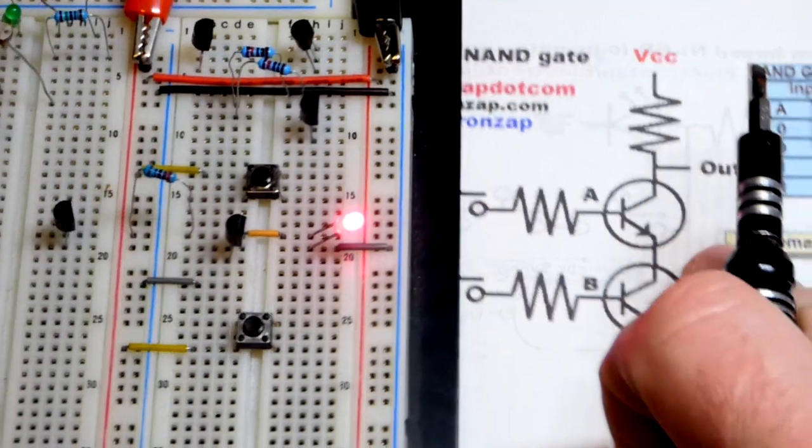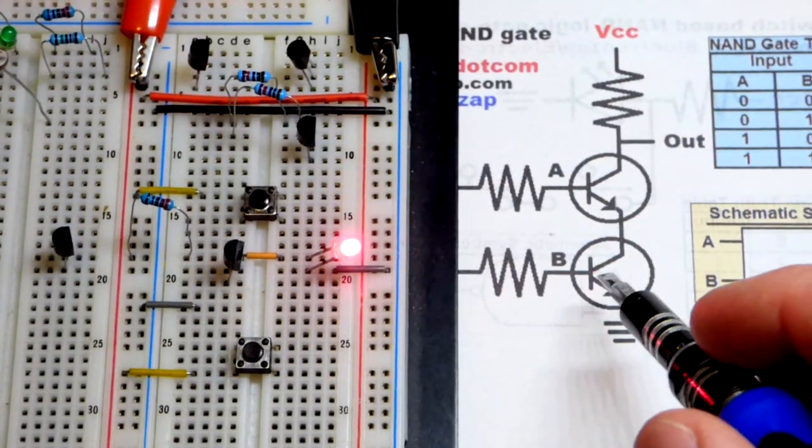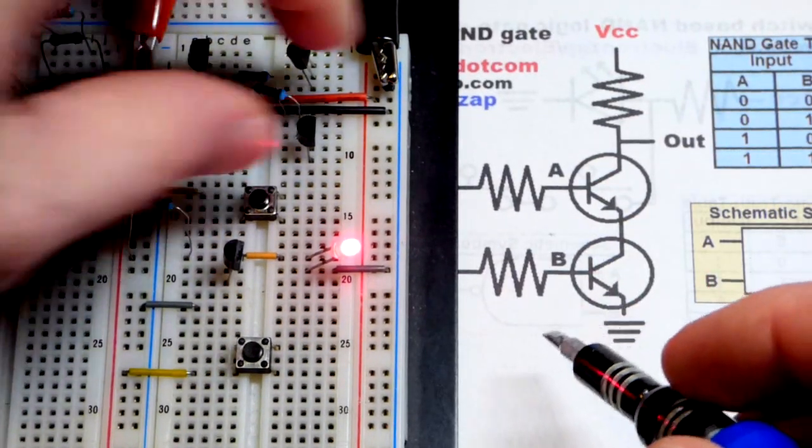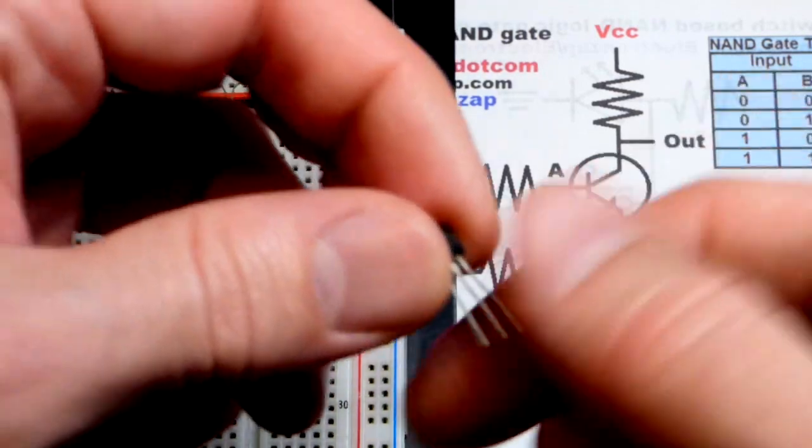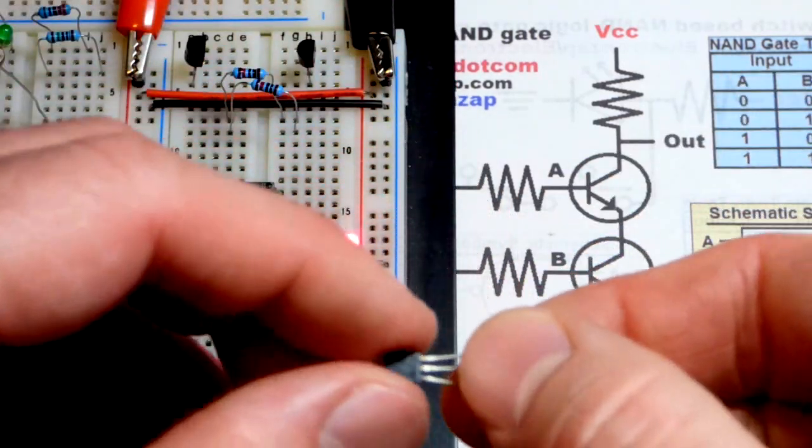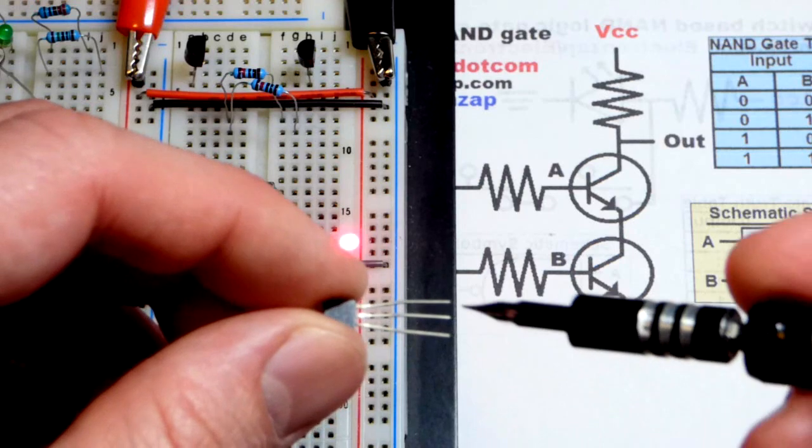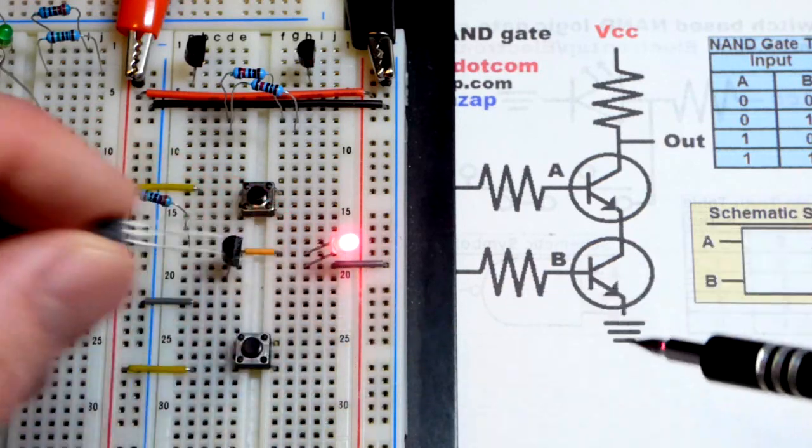The other NPN bipolar junction transistor, again, a 2N2222. Same pin layout, looking at the flat side, swivel it that way. Now the emitter is at the bottom, base in the middle, collector on top, like we see there.